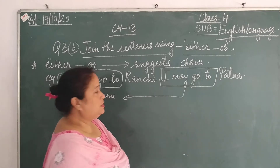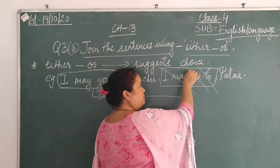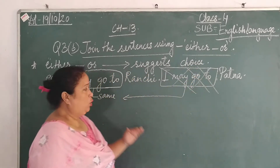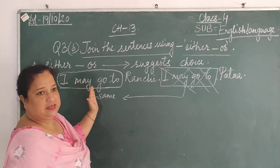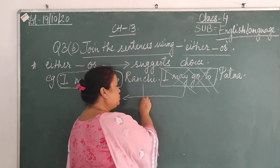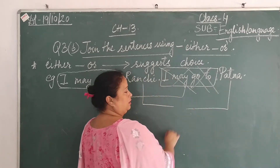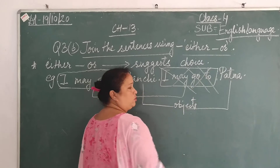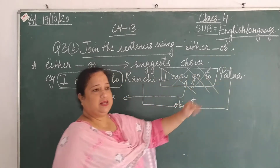When we write the answer, we shall remove — we shall not write the words that are similar from the second sentence. We shall only use the similar words in the first sentence. Now what are we talking about? We are talking about going to Ranchi and going to Patna. These are our objects, and we have got a choice to make — to go to any one of these places.